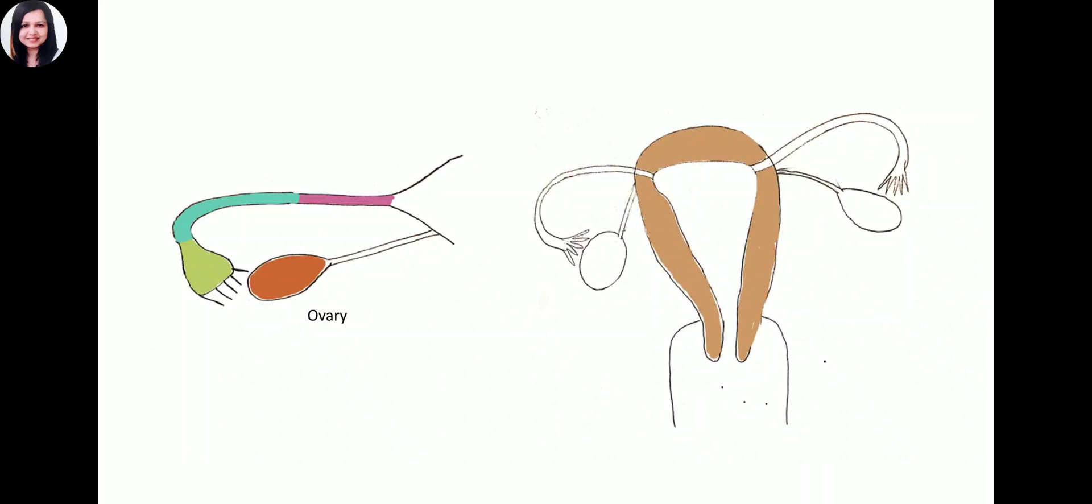Fertilization is the fusion of the sperm and the ovum. This takes place in the ampulla of the fallopian tube. Both the ovum and the sperm must be transported from their gonadal site of production to the ampulla of the fallopian tube for fertilization.